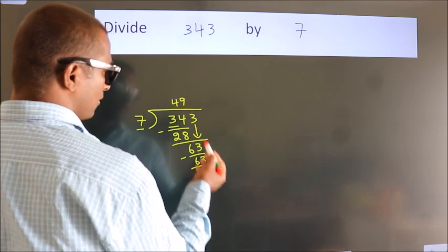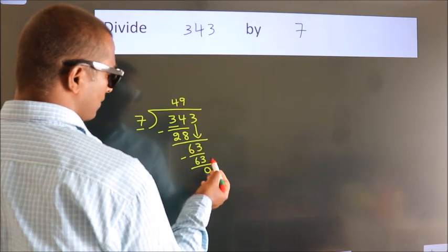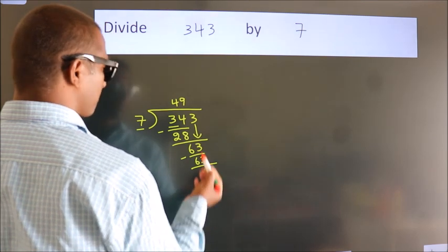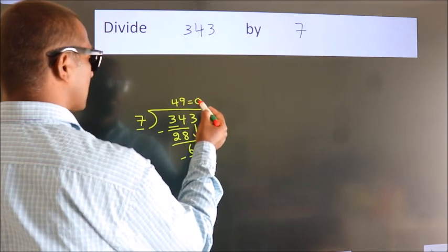After this, no more numbers to bring it down. And we got remainder 0. So this is our quotient.